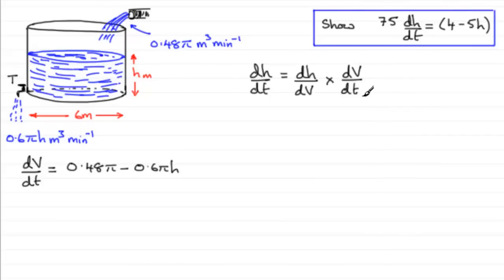Now we already know the rate of change of volume, it's this, in general. But we need to work out what dh by dV is, the rate of change of the height with respect to volume. Now the easiest way we can go about this is by looking at what the volume is in general for the amount of water after t minutes.